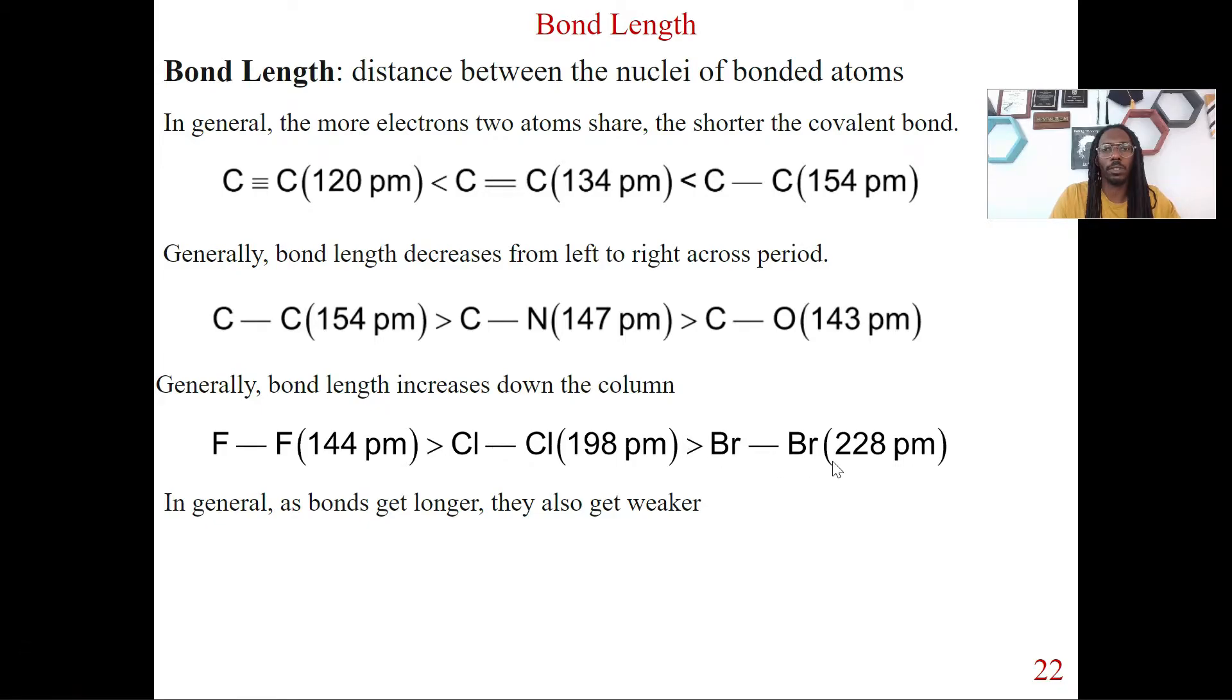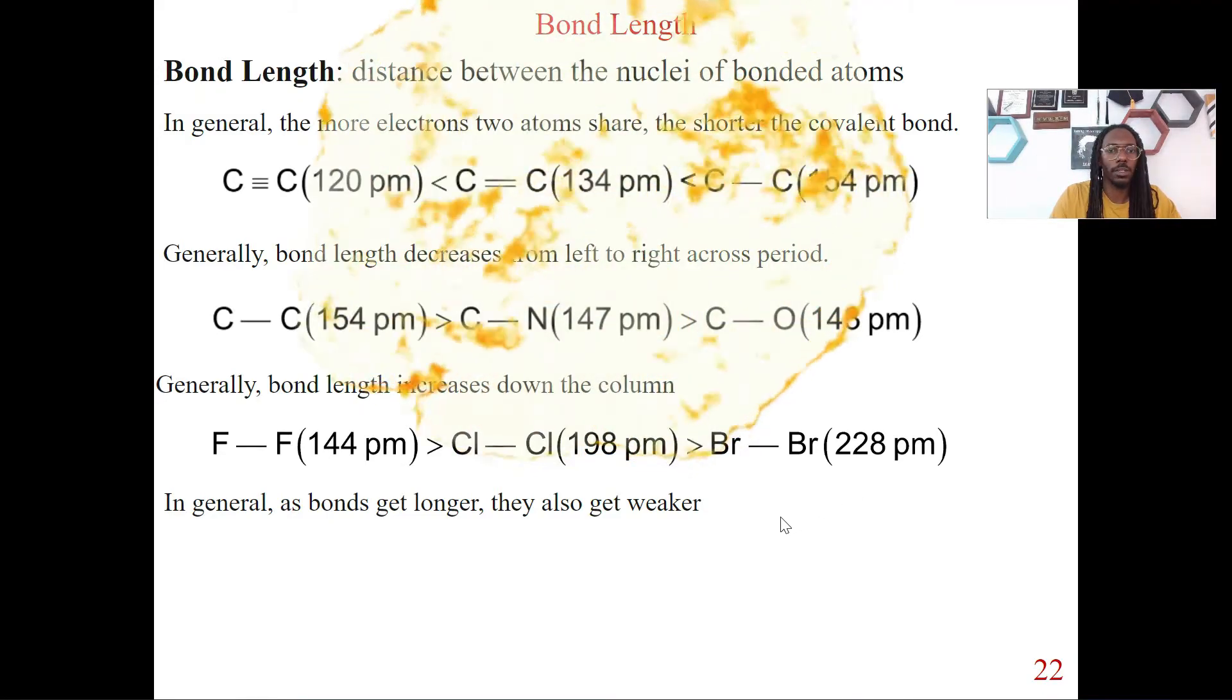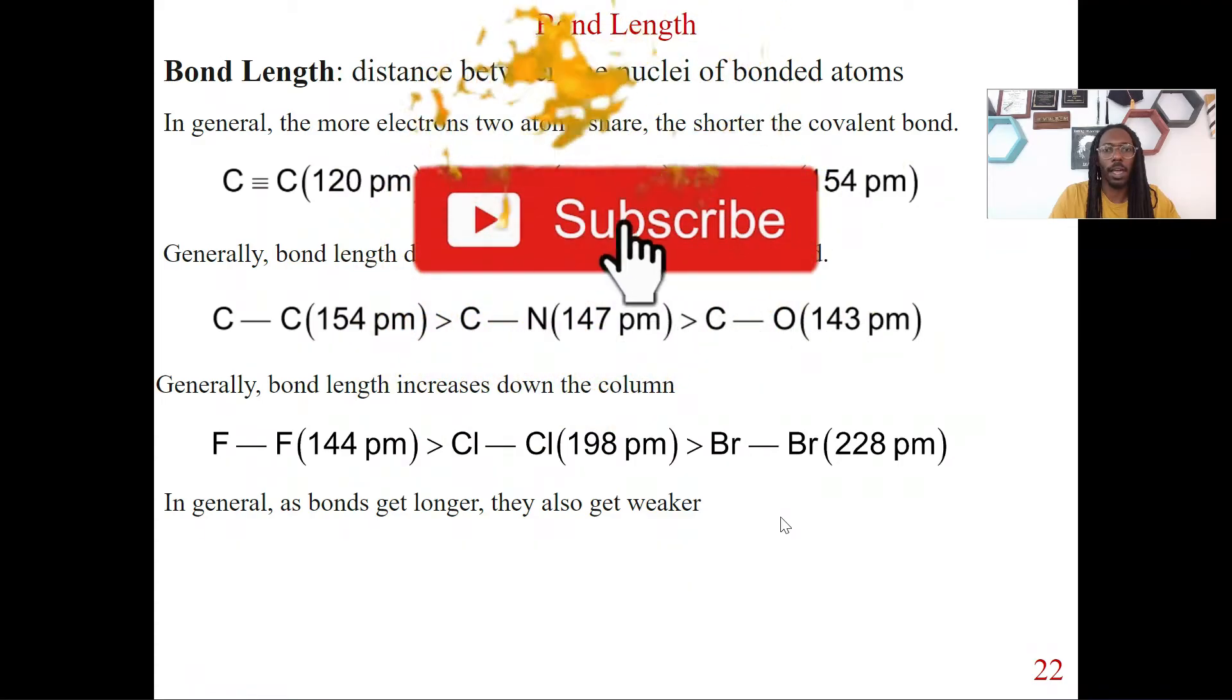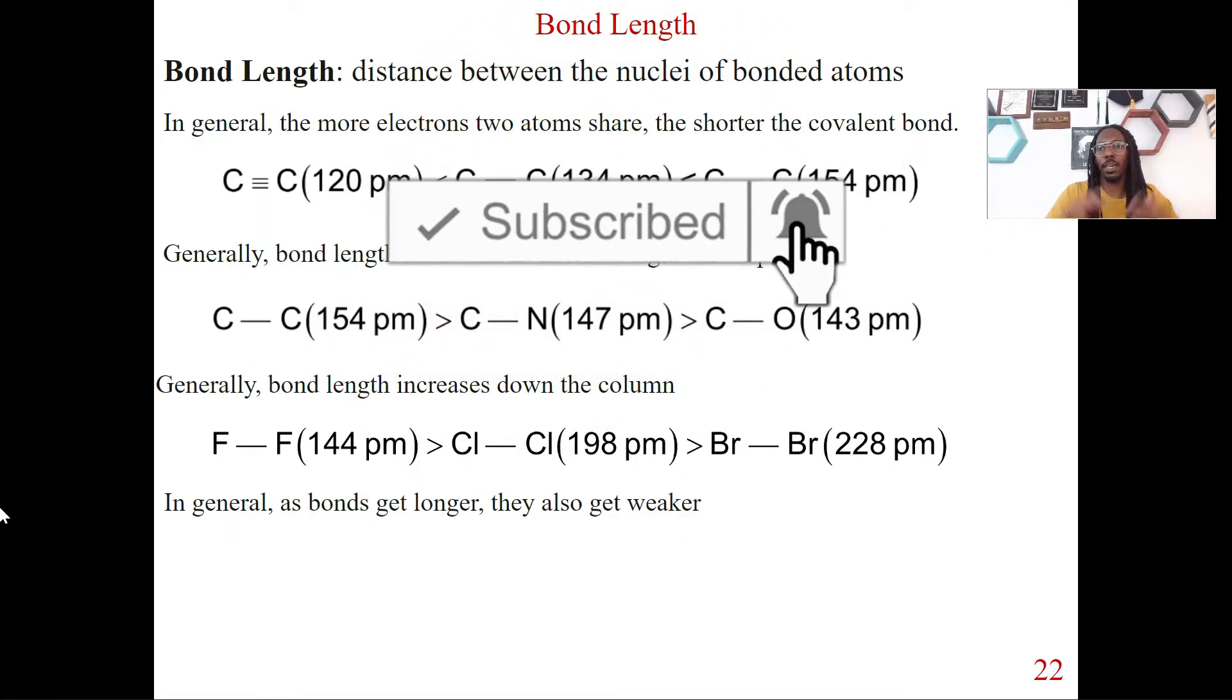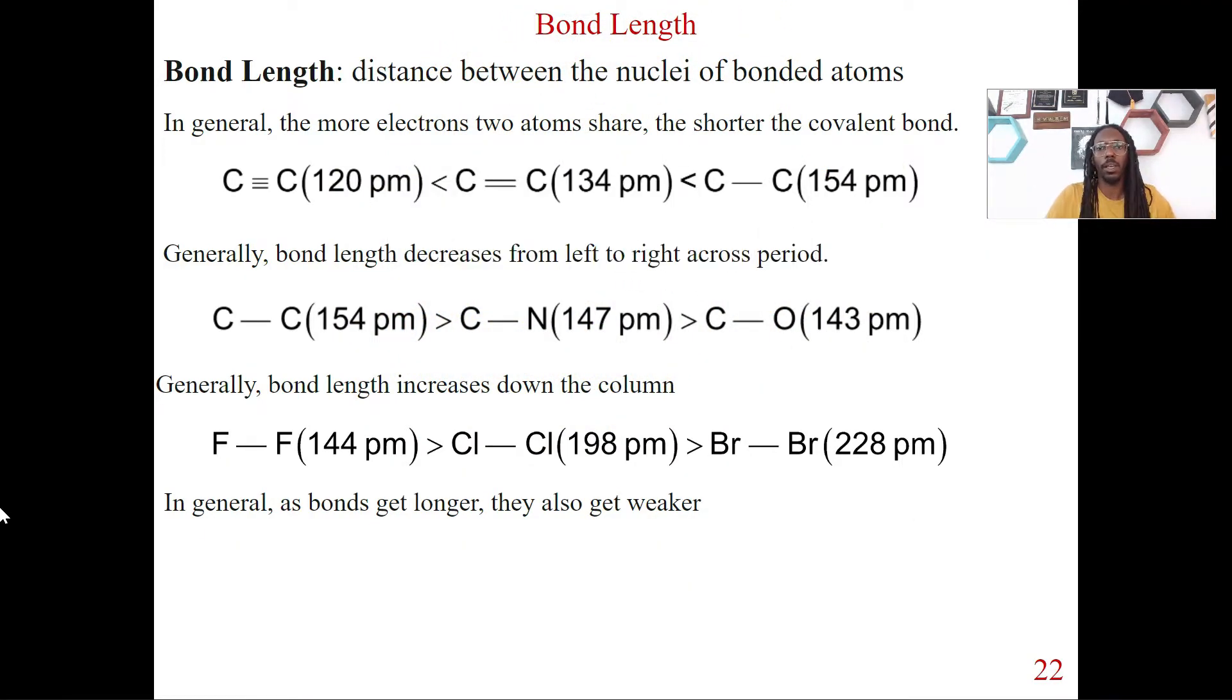we're going to see that bond length is dramatically spread apart in this case here. Okay, so bonds get longer as they get weaker. All right, that's the key general trend here. The weaker the bond, the longer the bond length. The stronger the bond, in this case, the shorter the bonds. Okay, so that's essentially it, and that explains all three of these trends here.